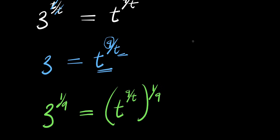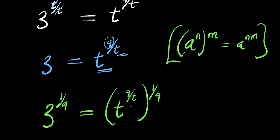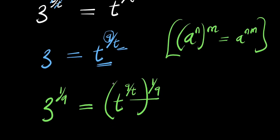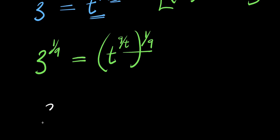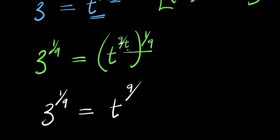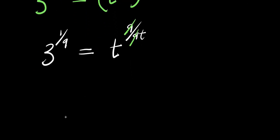Now I still make use of the same identity: a to the power of n, raised to the power of n, equals a to the power of n times n. So I need to multiply this out. That means I'm simply going to have 3 to the power of 1 over 9, and this equals t to the power of 9 over t times 1 over 9 — that is 9 divided by 9t. The 9s cancel, so what I'm going to have is simply 3 to the power of 1 over 9, and this equals t to the power of 1 over t.